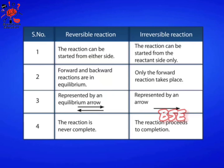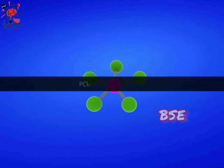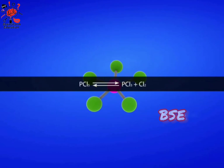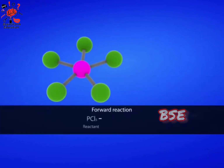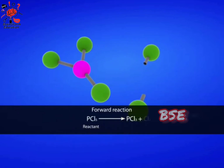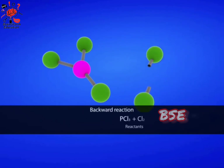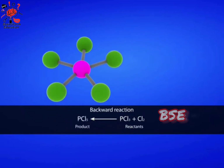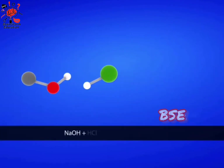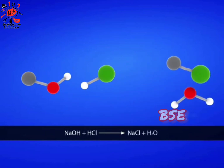Thermal decomposition of phosphorus pentachloride into phosphorus trichloride and chlorine is a good example of a reversible reaction. Phosphorus pentachloride dissociates into phosphorus trichloride and chlorine in the forward reaction. Phosphorus trichloride and chlorine combine with each other to become phosphorus pentachloride in the backward reaction. Neutralization between a strong acid and strong base is an irreversible reaction with the evolution of heat.